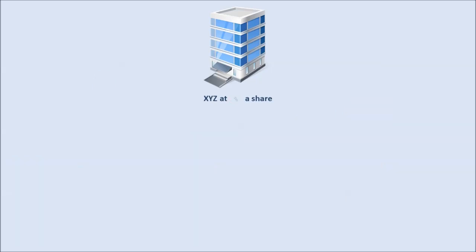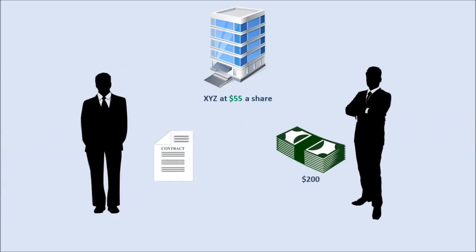If shares of company XYZ are trading at $55 within a month, Mike would not want to exercise this option since he can sell for more on the market. Mike would then only lose the $200 he paid for the contract. Bill would then profit $200 from the contract.